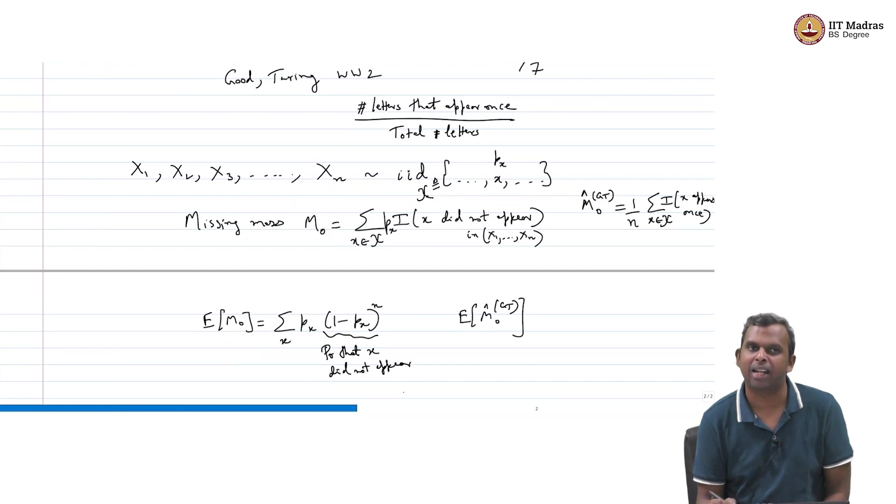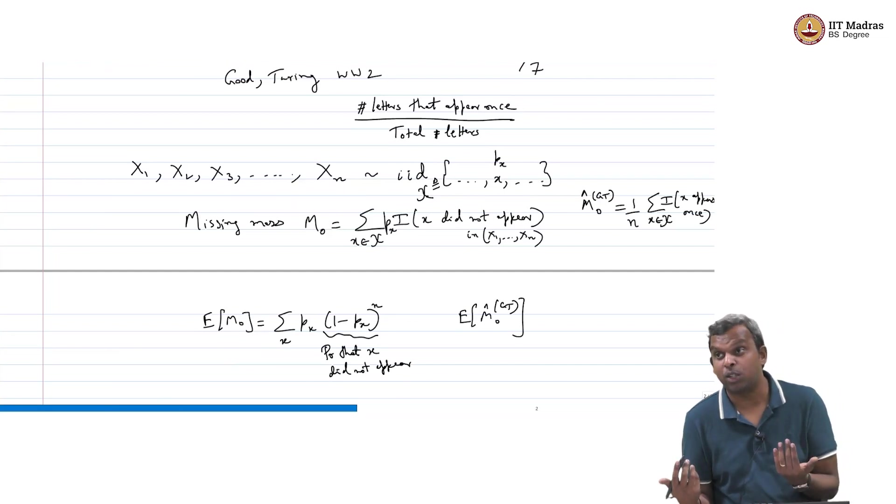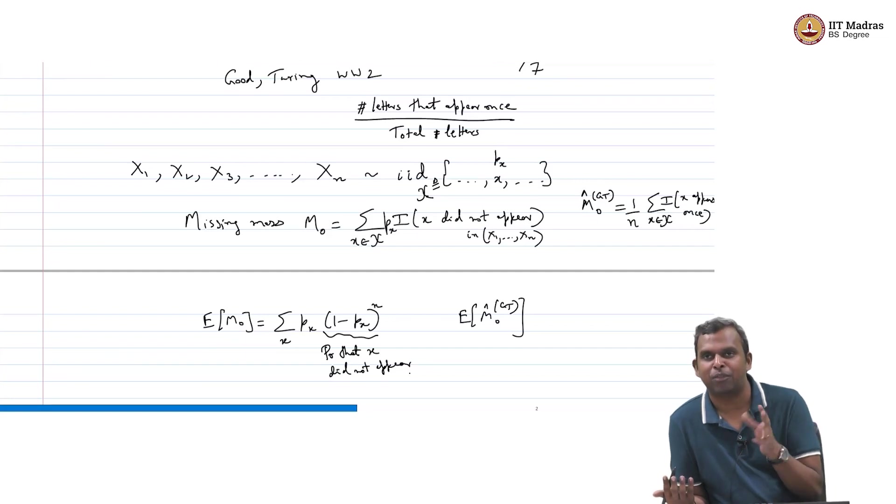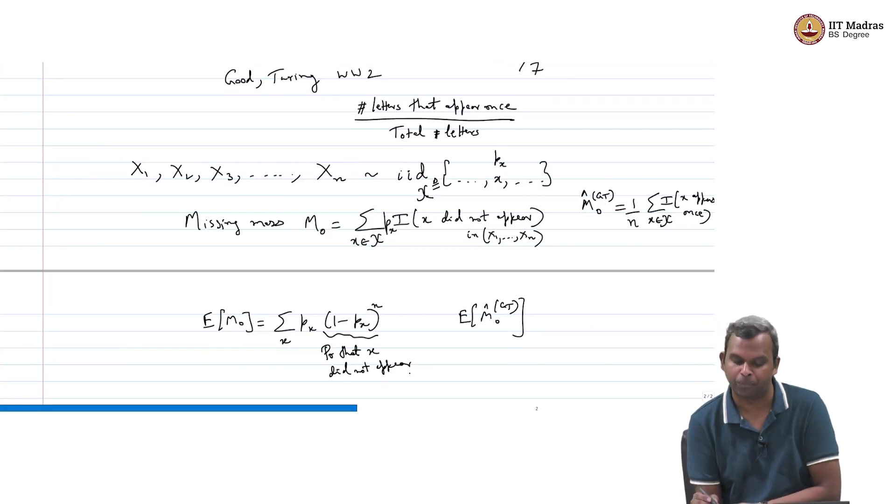Right, if I do expected value, I know expected value behaves well with summation, it can go in and this P_X is a constant, so it is going to come out. So I need expected value of indicator of X did not appear. Indicator X did not appear takes only two values, 0 and 1. So it is just 1 times the probability that X did not appear, right. So this will, I am going very quick here, I do not have too much time but anyway. So this will end up being (1 minus P_X)^n because this is the probability that X did not appear, okay. This is probability that X did not appear.